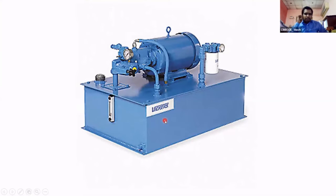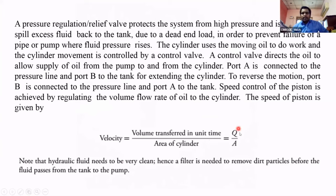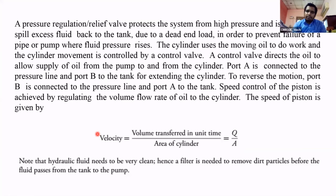This is the real hydraulic power system - the reservoir, motor, pump, input/output pipes, and pressure gauges. We can also control the speed of the piston using the relation: velocity equals flow rate divided by area. By controlling the flow rate, we can control the velocity. If fluid is sent at high flow rate, the piston movement speed rises; if flow rate is less, the piston velocity decreases.